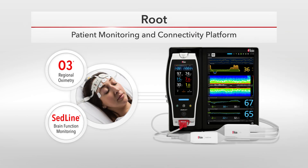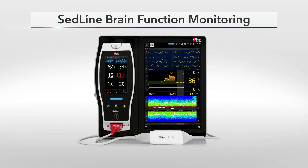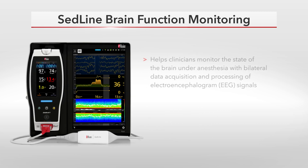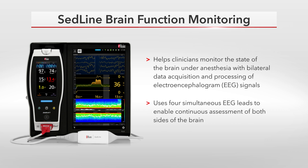SED-Line Brain Function Monitoring is also available as a Mach 9 module on Root. The SED-Line system is comprised of four components: Root, the SED-Line Mach 9 module, the SED-Line patient cable, and the SED-Line sensor. SED-Line helps clinicians monitor the state of the brain under anesthesia with bilateral data acquisition and processing of EEG signals, using four simultaneous EEG leads to enable continuous assessment of both sides of the brain.